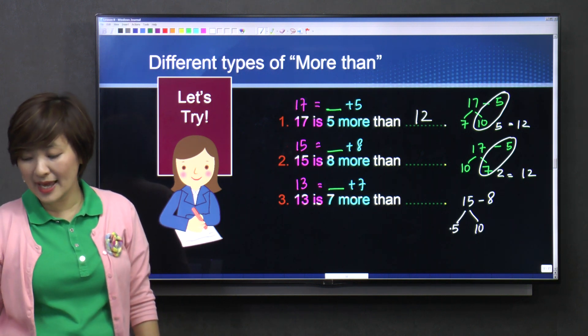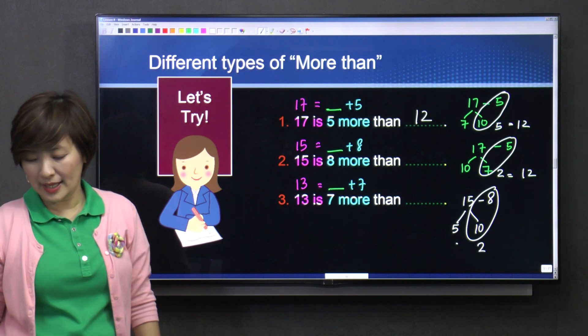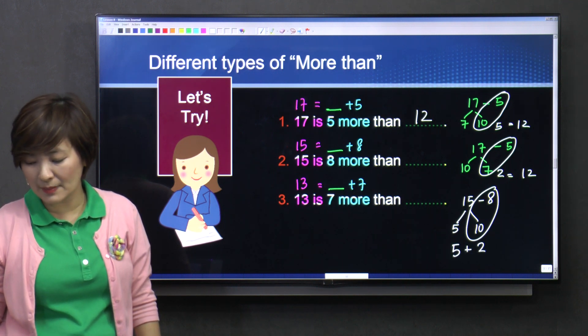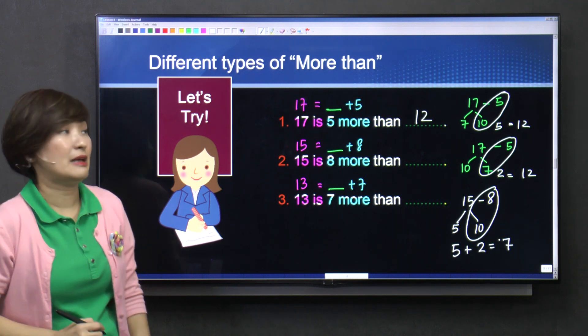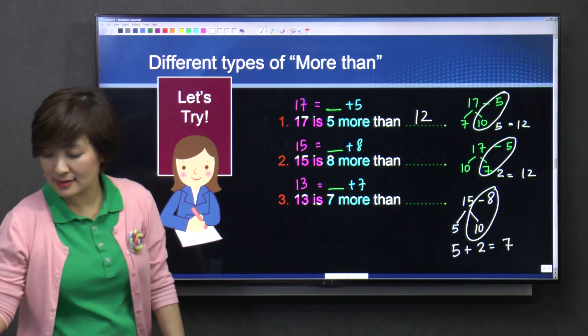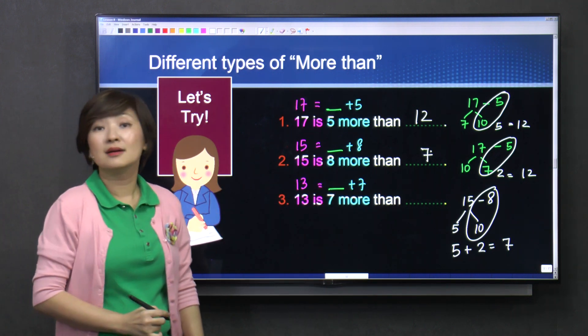Okay, so ten minus eight gives you two, and this is a five, you add them up, you get seven. Fifteen is eight more than seven.